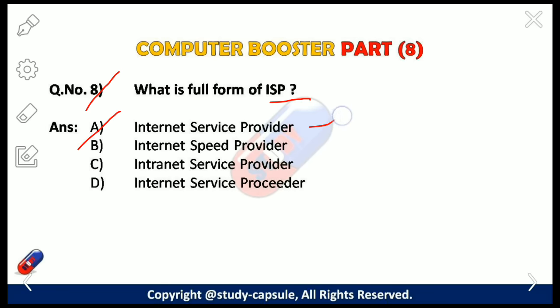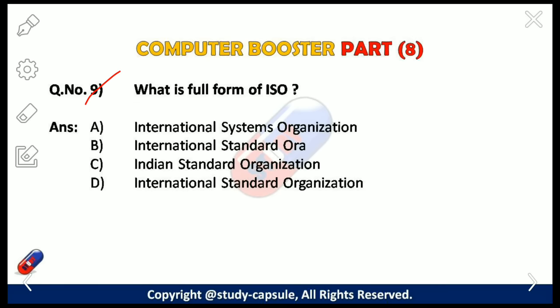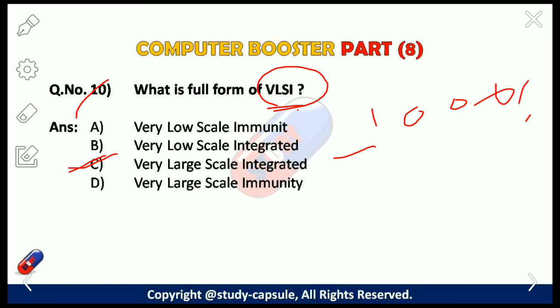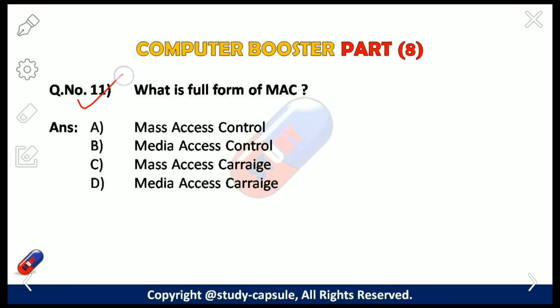Our next question: what is the full form of ISP? The answer is A — Internet Service Provider. Our ninth question: what is the full form of ISO? The answer is D — International Standard Organization. Our tenth question: what is the full form of VLSI? The answer is C — Very Large Scale Integration. VLSI is the process of creating an integrated circuit by combining thousands of transistors into a single chip.